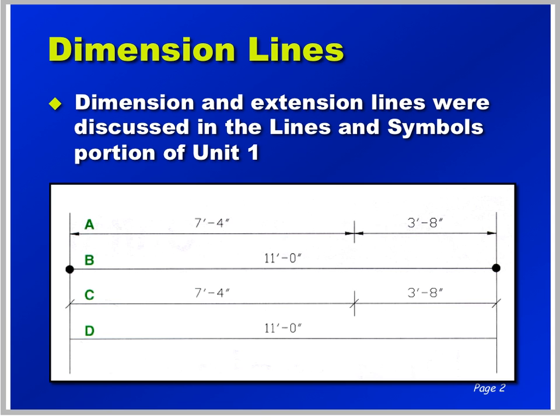Let's review dimension lines and extension lines that were discussed in Unit 1. Dimensions are distances between two points in and or on a building. The outside edges of the building will typically be the longest, with intermediate dimensions delineating other edges or portions of the building.